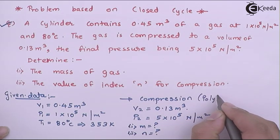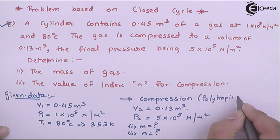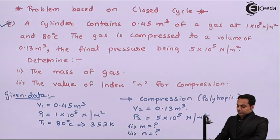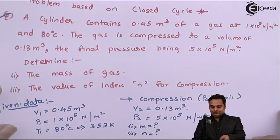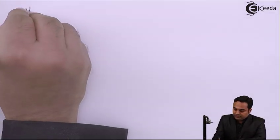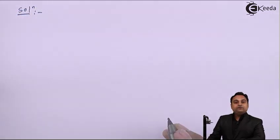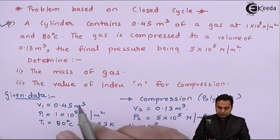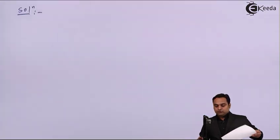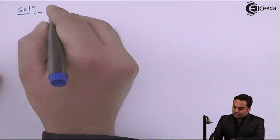Now with the data available to us, let us get the solution to this problem. In the solution part, first we have to find the mass of gas. Initial pressure, volume and temperature are given, so I'll use the characteristic gas equation.